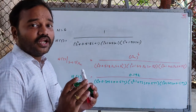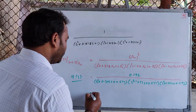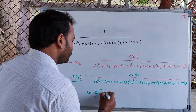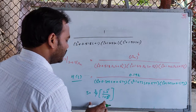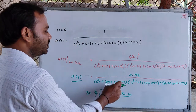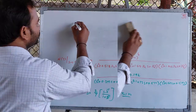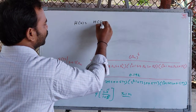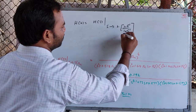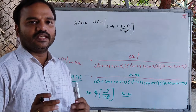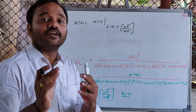This analog filter transfer function now needs to be transformed and mapped to the digital domain using bilinear transformation. We replace S with (2/T) × (1 − Z⁻¹)/(1 + Z⁻¹), taking T = 1 second, to obtain H(Z). Thus, H(Z) = H(S) evaluated with S replaced by 2 × (1 − Z⁻¹)/(1 + Z⁻¹). This completes the design of the digital low-pass Butterworth filter for the given specifications.